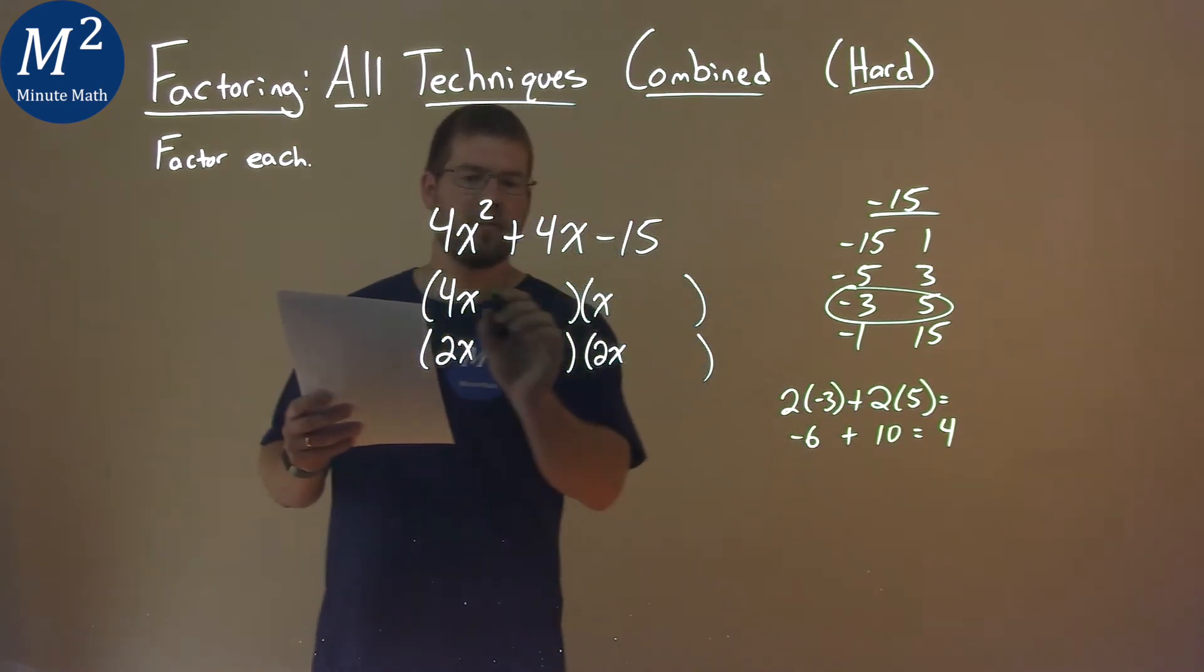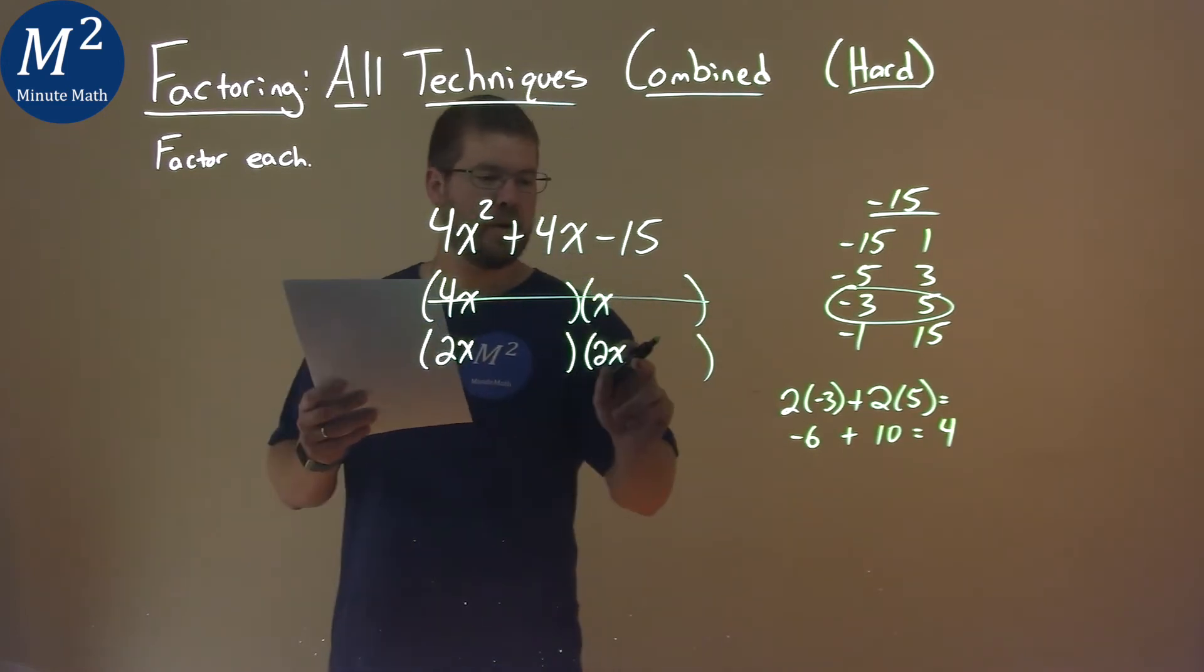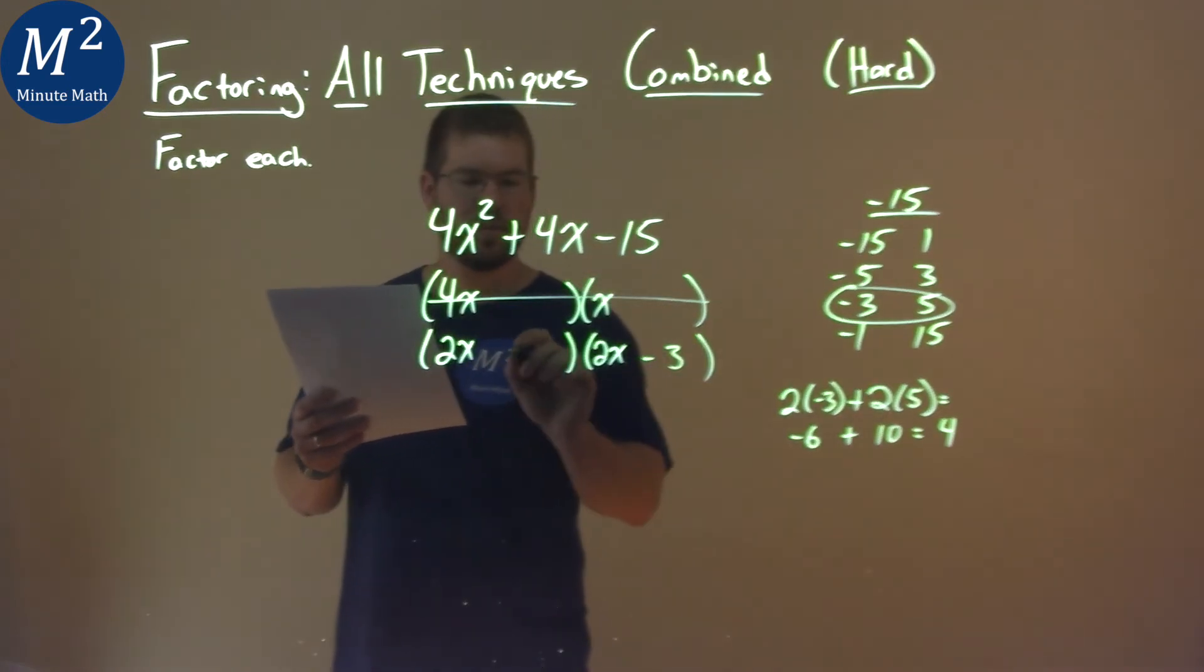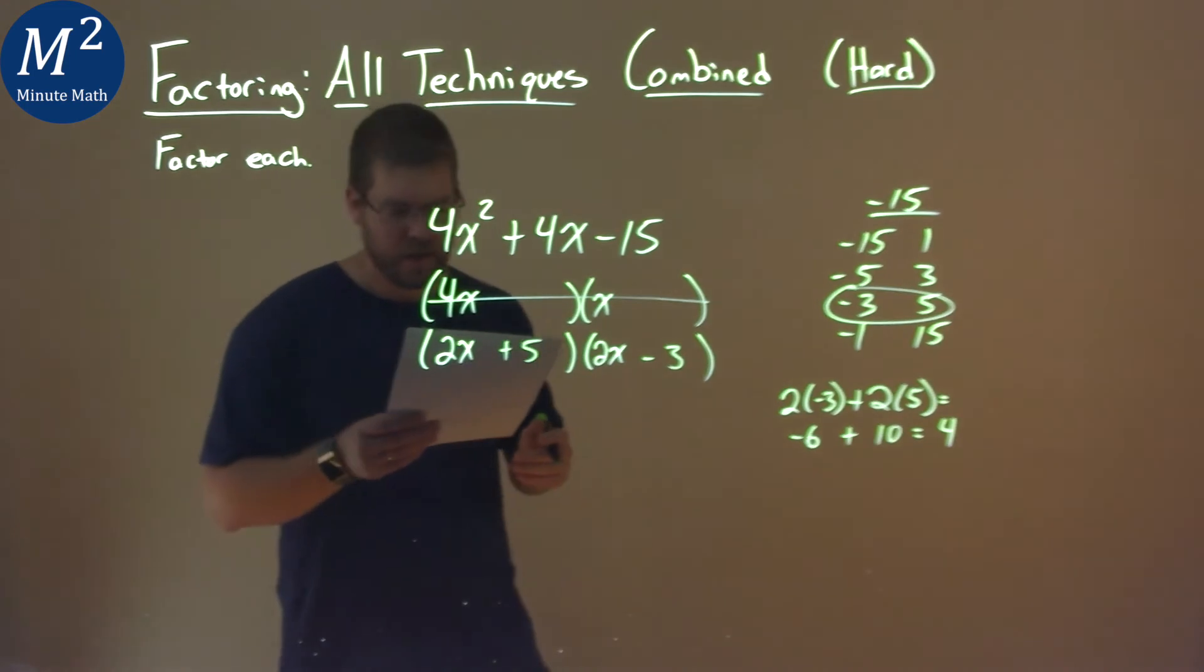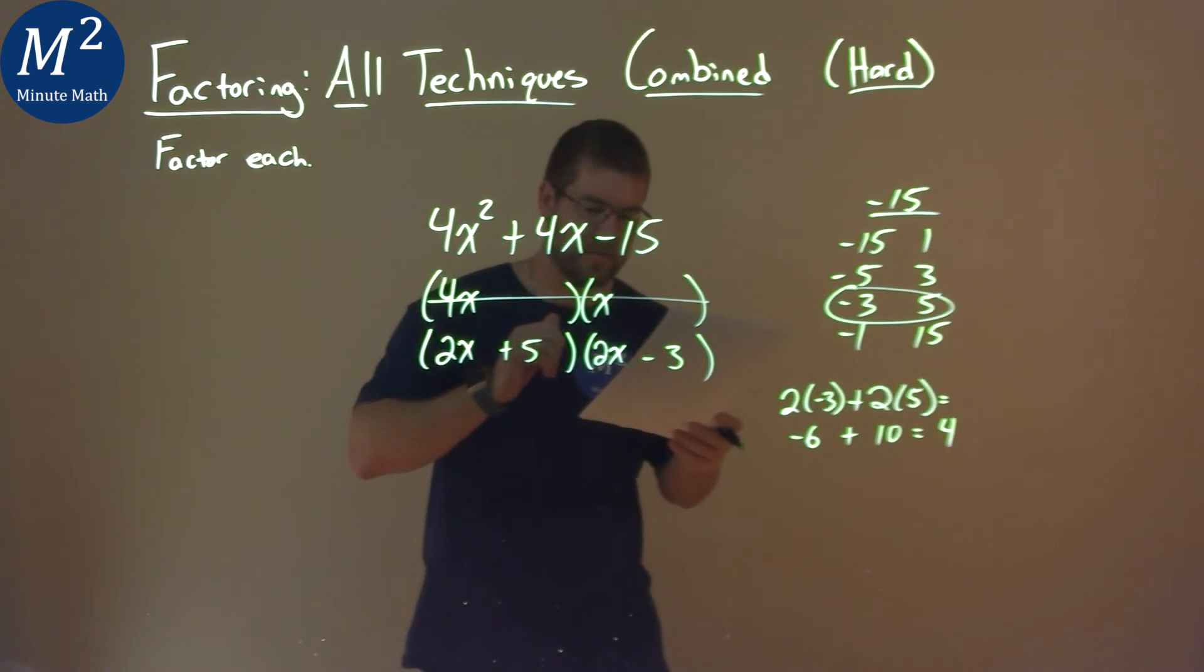So we ignore the first part here, and we're going to use the 2x and the 2x. 2x gets multiplied by the negative 3, and the other 2x gets multiplied by the 5. And so our final answer here is 2x plus 5 times 2x minus 3.